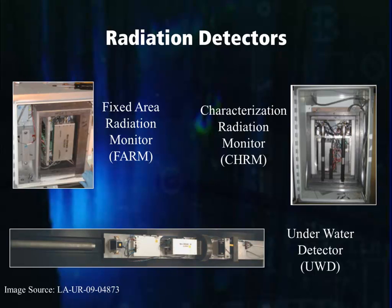Three common types of radiation detectors used by the IAEA for safeguards are the fixed area radiation monitor, the characterization radiation monitor, and the underwater detector. Each of these detectors is used at strategic points in a facility to monitor the movement of nuclear material within a fixed space. Commonly, the underwater detector will be placed in a channel where fuel is being moved from the spent fuel pond or the fresh fuel pond into the reactor core. The fixed area radiation monitor is used in a specific location to indicate variations in the radiation being released. The characterization radiation monitor is used to indicate what types and amount of radiation are being released at a specific location or area.